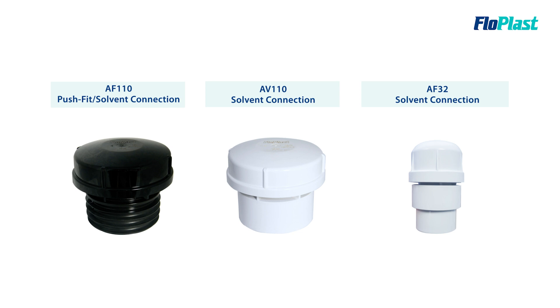By using an air admittance valve, you do not need to penetrate the outer roof shell. Instead, you can place it in the loft space, reducing expensive labour and roofing material costs.